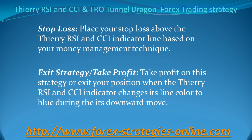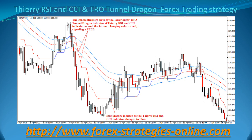Target. Take profit on this strategy or exit your position when the Theory RSINCCI Indicator changes its line color to blue during its downward move. The chart above depicts the candlesticks going below the TRO Tunnel Dragon lower outer line and the Theory RSINCCI Indicator turns red as well.